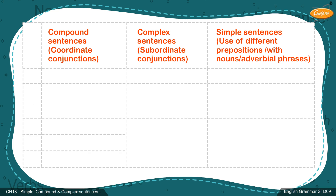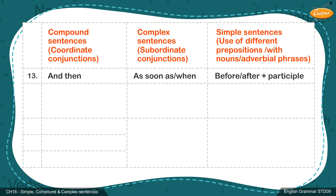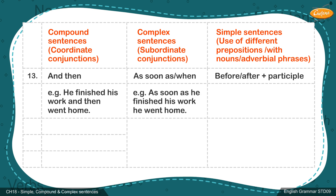Compound sentence conjunction 13: And then. Complex sentence conjunctions: As soon as, When. Simple sentence conjunctions: Before, After, plus participle. Compound sentence example: 'He finished his work and then went home.' Complex sentence example: 'As soon as he finished his work, he went home.' Simple sentence example: 'After finishing his work, he went home.'